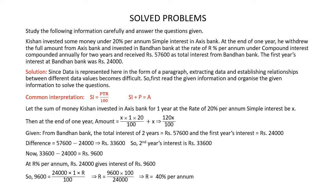At Bandhan Bank, it's given that Kishan receives Rs 57,600 as total interest for two years. Also, it's given that the first year's interest at Bandhan Bank is Rs 24,000. The difference, 57,600 minus 24,000, which is Rs 33,600, is the second year's interest at Bandhan Bank. So the first year's interest at Bandhan Bank is Rs 24,000 and second year's interest at Bandhan Bank is Rs 33,600. As you can see, there is a difference of interest in the two years.